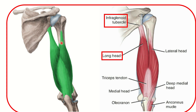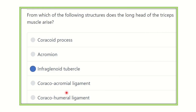So, a very short review: the triceps muscle arises from three heads. The long head arises from the infraglenoid tubercle and inserts into the olecranon process of the ulna. It is supplied by the radial nerve and causes extension of the elbow joint. The answer is: the long head of the triceps muscle arises from the infraglenoid tubercle. Thank you.